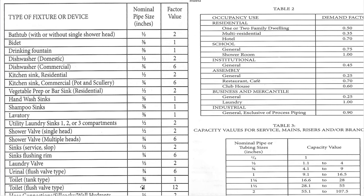Down here we have the one-inch flushometer style — you get a factor value of twelve. So you need to know those.